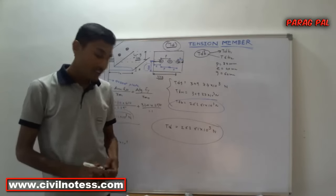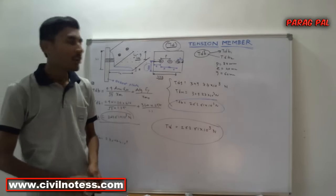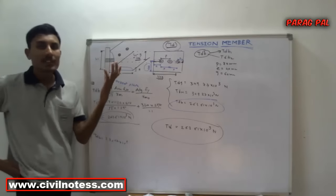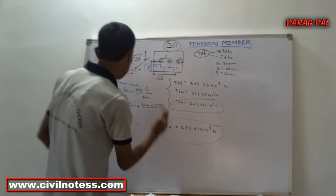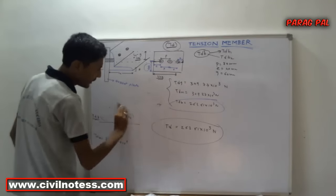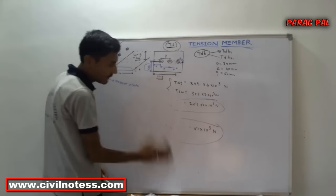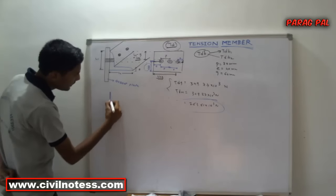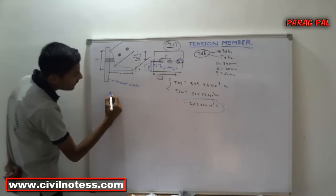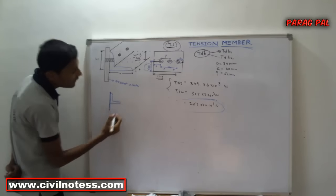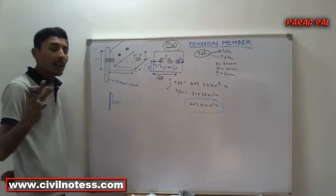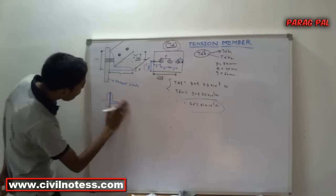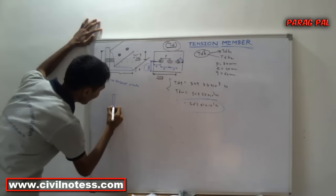Up to this point we have the value of Td and can proceed with further calculations. In this video we took a single angle section. But in different cases, the configuration may vary. For Type 2, a single angle is connected to a gusset plate; for Type 3, two single angles are connected on opposite sides of the gusset plate.